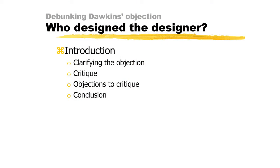In the book's crucial fourth chapter, Dawkins argues that the objection or question, 'who designs the designer?' blocks any reasonable inference to a designer. In today's talk, I will argue that this important and popular objection is a philosophical failure, a philosophical blunder. First, I will clarify the objection, then I will set up my critique, and then I will consider a couple of objections to my critique.